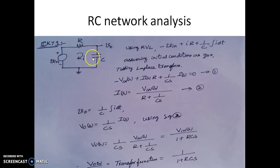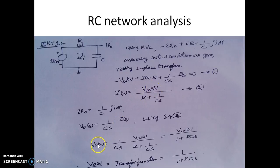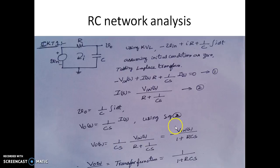We know the expression for the output voltage, which is the voltage drop across the capacitor, given by (1/C)·∫I dt. Again, assuming initial conditions as zero, V_out(S) in Laplace is given by (1/CS)·I(S). Substituting I(S), we get V_out(S) = VIN(S) / (1 + RCS).